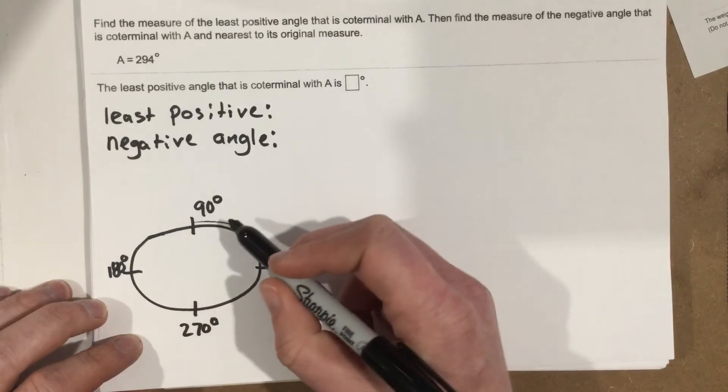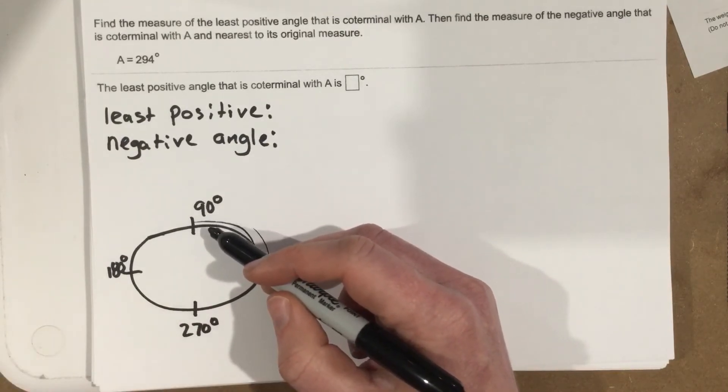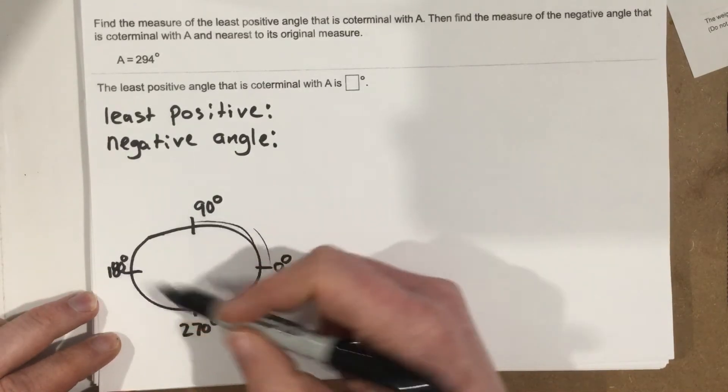So coterminal angles are just angles that are in the exact same spot on the circle as the normal angles we're used to, which is 0, 90, 180, 270.